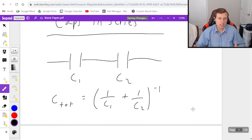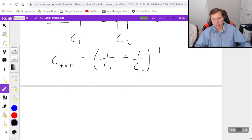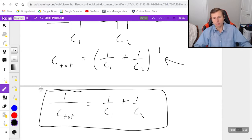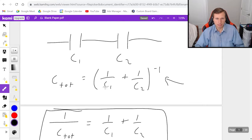You might see something different in your notes. You might see this in your notes: one over C total equals one over C1 plus one over C2. I'm here to tell you this is literally the exact same thing. I like my equation better because it has the negative first power in the equation, which if you use this version you'll basically have to do that anyway. So I like my version better.